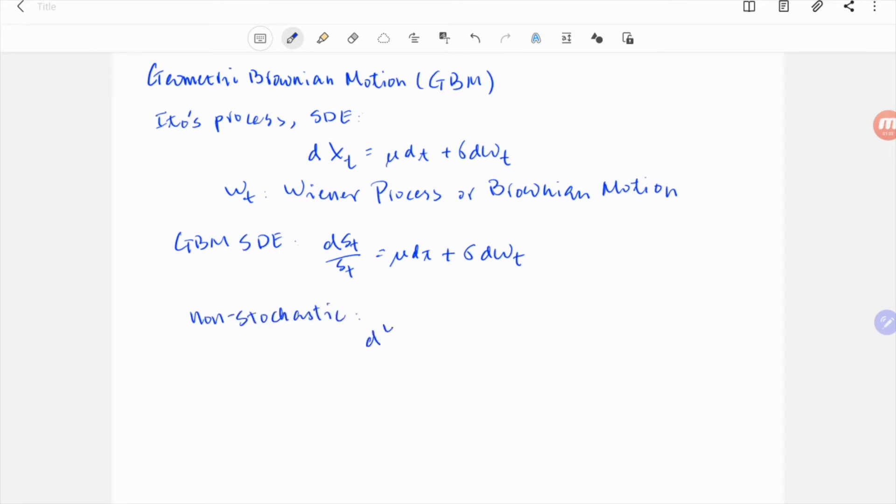Compare it with a non-stochastic SDE, a simple one: dyt over yt equals dt, which can be solved by separation of variables. We have the solution in logarithmic form, log yt equals t, or the exponential form, yt equals exponential t.